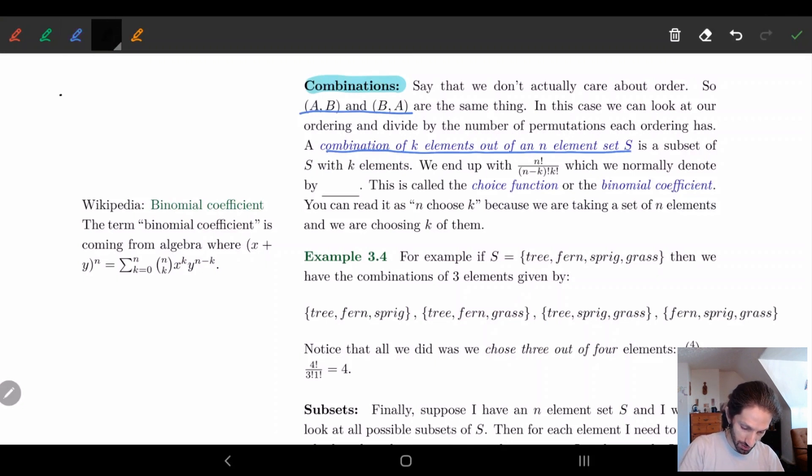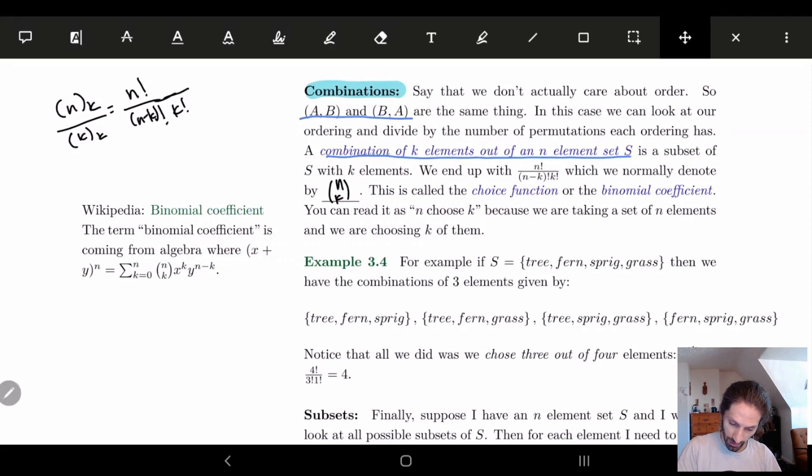So what I really want to do is I want to take everything all the orderings divide by the permutations and that'll give me the combinations. So if you think about this, we have n factorial over (n minus k) factorial times k factorial. So some of you have probably seen this equation before, this is called the choice function. So here we denote this by n choose k.